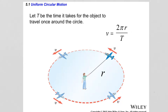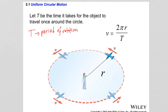The time it takes for an object in uniform circular motion to complete one full revolution is called the period of rotation, labeled with capital T. For a circular trajectory with radius R, knowing the period of rotation, one can calculate the speed of rotation. The speed equals the circumference 2πR divided by the period T — essentially distance divided by time. Since the radius and period are both constant, the speed is constant.